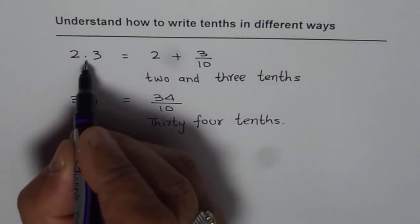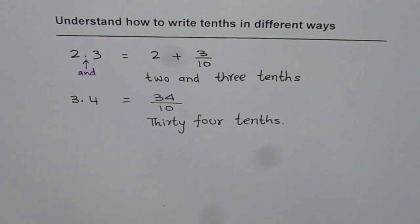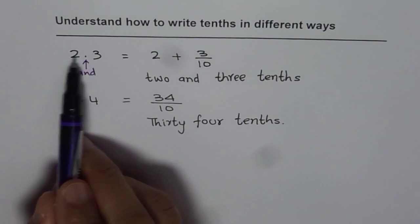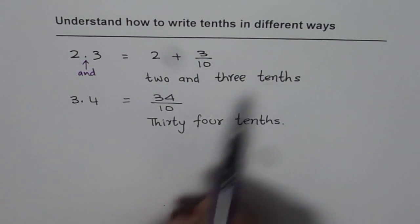One way is to replace the decimal point with 'and.' This is the standard way. Write the number before it: 2 and three tenths.